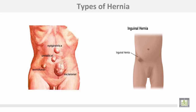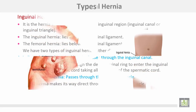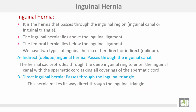This shows the types of hernia: above the inguinal ligament is the inguinal hernia, there is epigastric hernia, umbilical hernia in the umbilical region, and incisional hernia through an incision in the anterior abdominal wall. The inguinal hernia is the hernia that passes through the inguinal region, either in the inguinal canal or in the inguinal triangle. Inguinal hernia lies always above the inguinal ligament, while femoral hernia lies below the inguinal ligament. There are two types of inguinal hernia: direct or indirect (oblique).